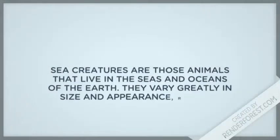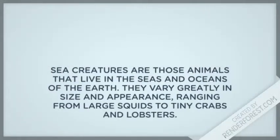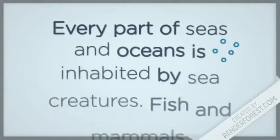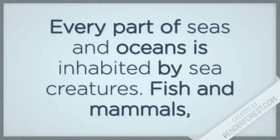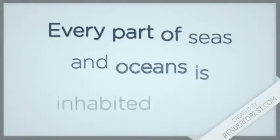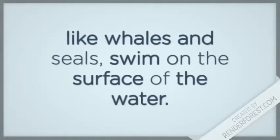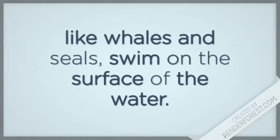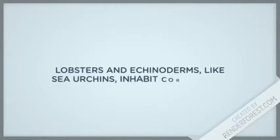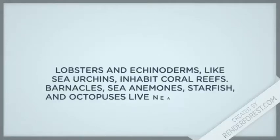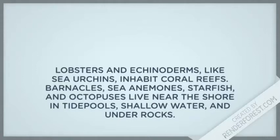Sea creatures are those animals that live in the seas and oceans of the earth. They vary greatly in size and appearance, ranging from large squids to tiny crabs and lobsters. Every part of sea and ocean is inhabited by sea creatures. Fish and mammals like whales and seals swim on the surface of the water.